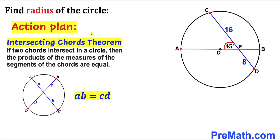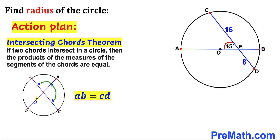Let's recall the intersecting chords theorem. According to this theorem, if two chords intersect in a circle, then the products of the measures of their segments are equal. As you can see in this diagram, we get segments A, B, C, and D, so we can write A times B equals C times D.